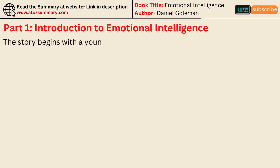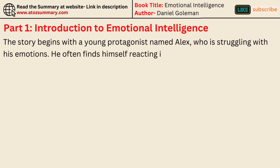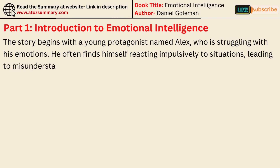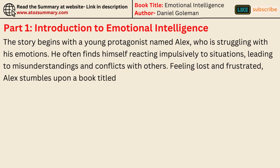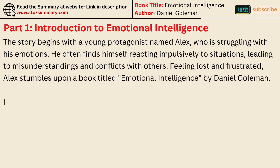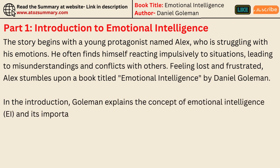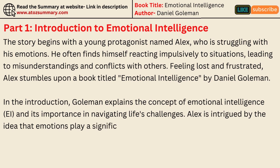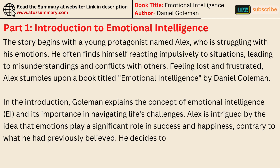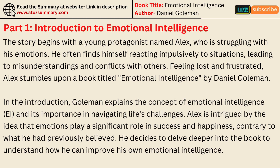The story begins with a young protagonist named Alex, who is struggling with his emotions. He often finds himself reacting impulsively to situations, leading to misunderstandings and conflicts with others. Feeling lost and frustrated, Alex stumbles upon a book titled Emotional Intelligence by Daniel Goleman. In the introduction, Goleman explains the concept of emotional intelligence and its importance in navigating life's challenges. Alex is intrigued by the idea that emotions play a significant role in success and happiness, contrary to what he had previously believed.